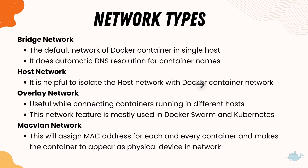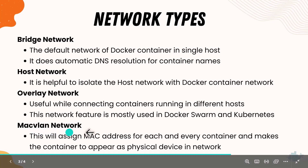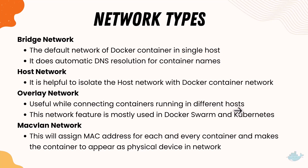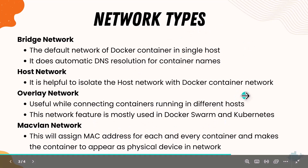We also have the host network, which is helpful to isolate the host network from the Docker container network, making containers completely isolated from the current host network. There is also the overlay network, which is very useful for connecting containers running in different hosts — this is most importantly used in Docker Swarm as well as Kubernetes. Finally, there is the Mac VLAN network, which assigns a MAC address to each container and makes the container appear as a physical device in the network, discoverable by its MAC ID.